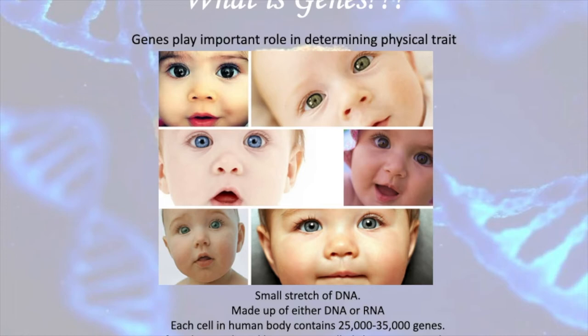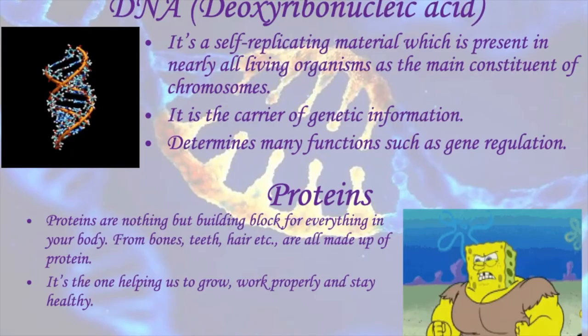According to your genes, your color, physical nature, character, and disease tendencies are all determined. That is why genes are given so much importance. Genes are a small stretch of DNA — sometimes made up of either DNA or RNA. In a human body, made up of millions of cells, each cell has almost 25,000 to 35,000 genes.